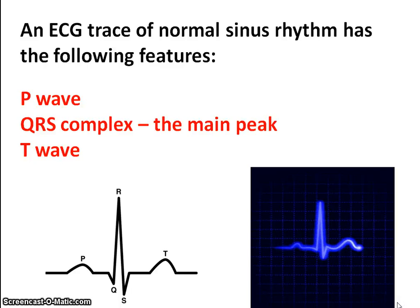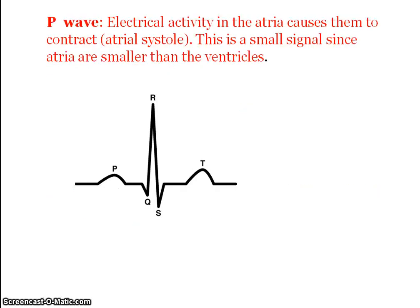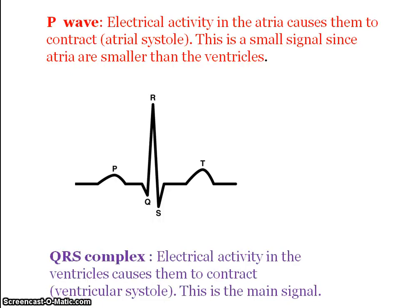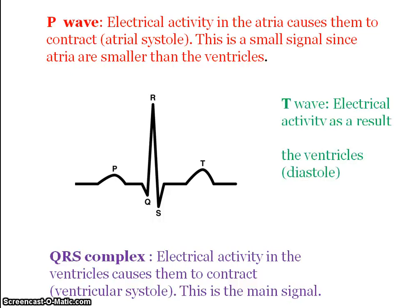The particular features found on a normal ECG trace are: the P wave, the QRS complex which is the main signal, and the T wave. The P wave is caused by electrical activity in the atria — the contraction of the atria. It is smaller than the others because the atria is smaller than the ventricles. The QRS complex is the signal produced by the contraction of the ventricles. The T wave is produced by the relaxation of the ventricles.